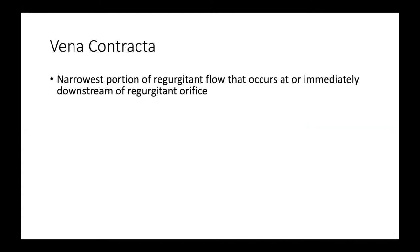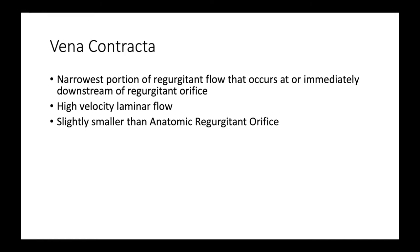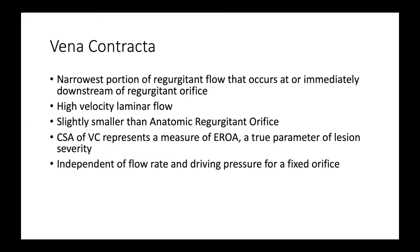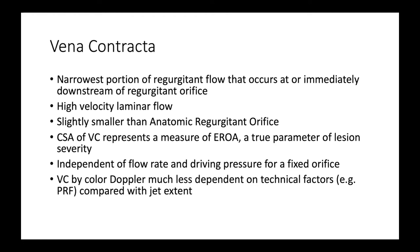Just a refresher on vena contracta: it's the narrowest portion of the regurgitant flow that occurs at or immediately downstream of the regurgitant orifice, characterized by high velocity laminar flow. It is slightly smaller than the anatomic regurgitant orifice. The cross-sectional area of the vena contracta represents the effective regurgitant orifice area — the measure of lesion severity — and is independent of flow rate and driving pressure for a fixed orifice. Compared to jet area, the vena contracta by color is much less dependent on technical factors, making it a good semi-quantitative measure.